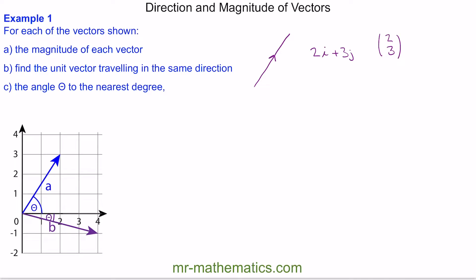To work out its magnitude, we need to imagine this as a right-angle triangle, where the vector would be the hypotenuse. This length would be the 2i component, or just two, and this length would be three. So now we can use Pythagoras's theorem to work out the magnitude of this vector, which would be the length of the hypotenuse.